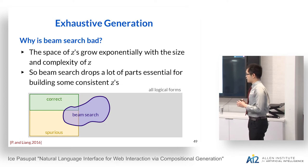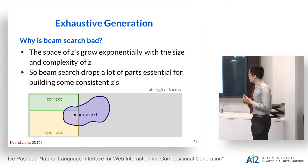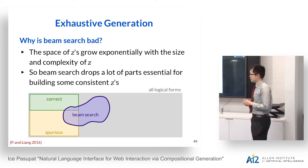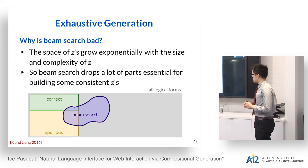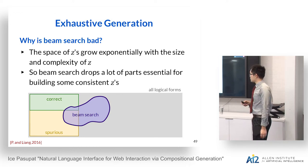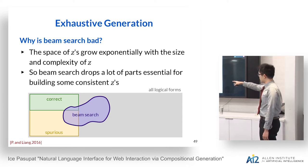To generate all consistent logical forms, we look back at the original parsing algorithm which uses beam search to control the search space by pruning lower-scoring candidates. The problem is that the space of logical forms grows exponentially with size and complexity, so beam search drops many parts essential for building correct logical forms — and thus only finds a portion of the consistent logical forms.